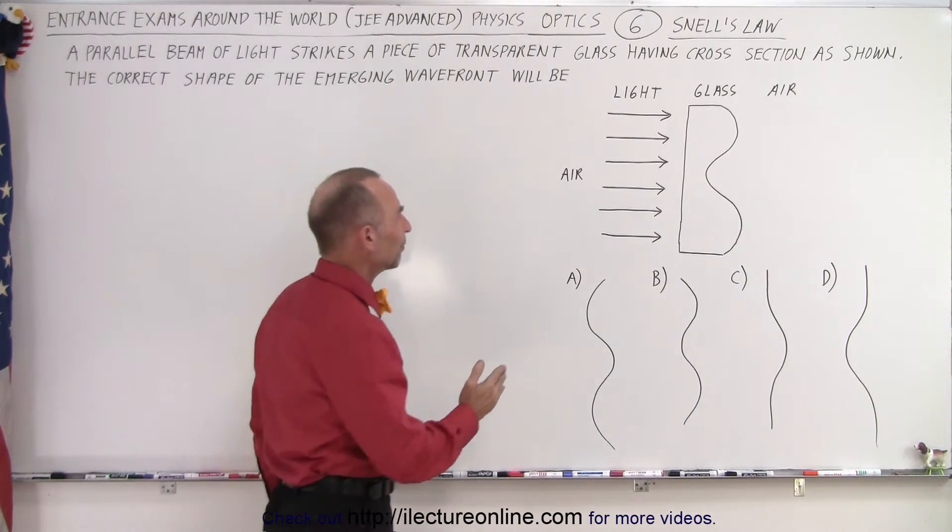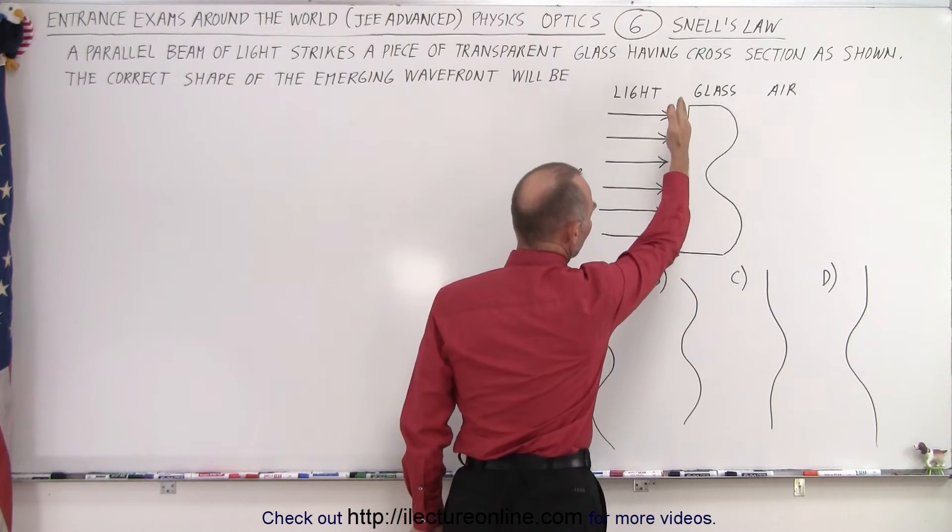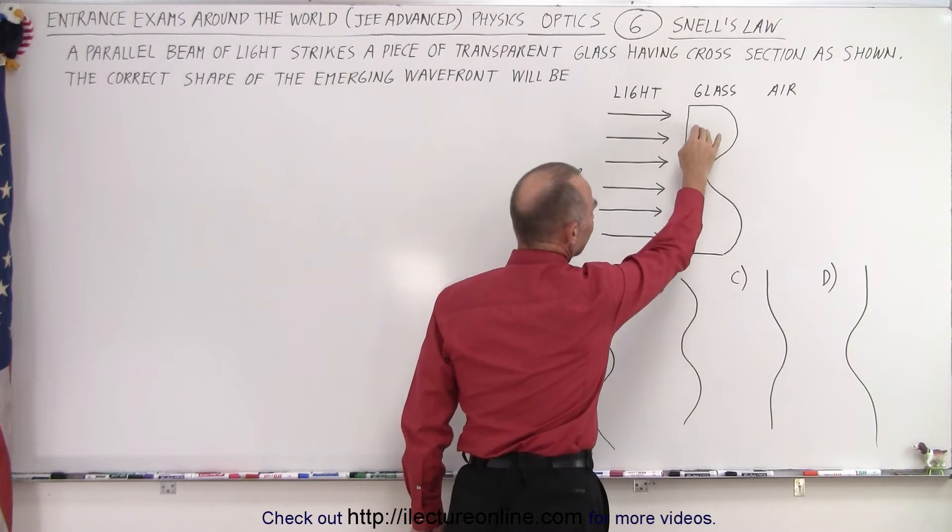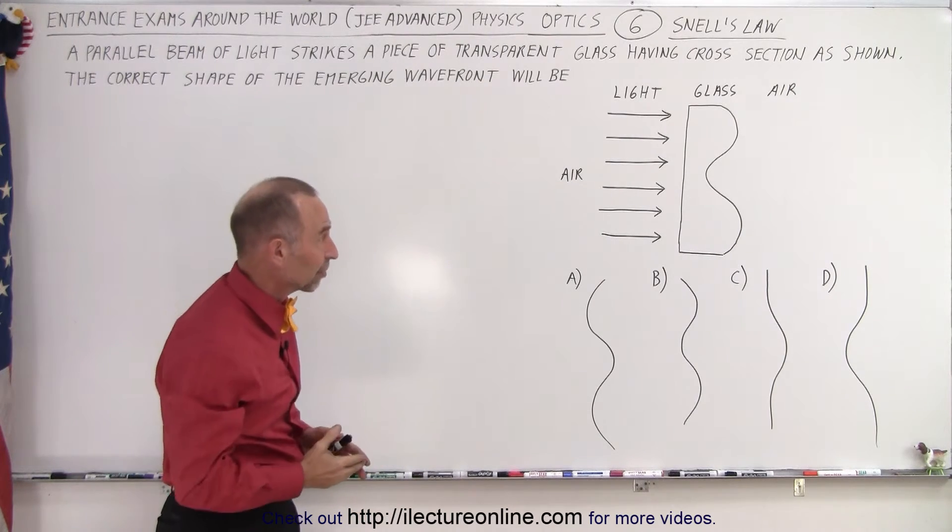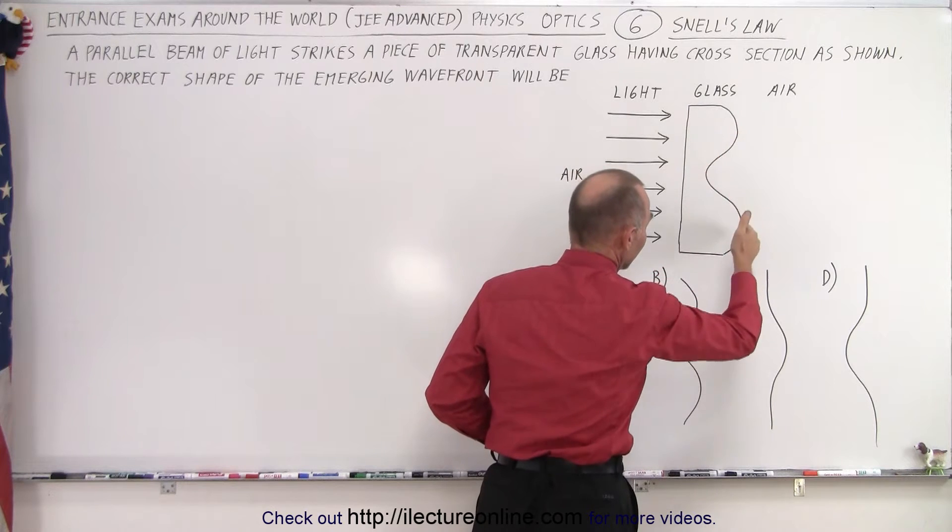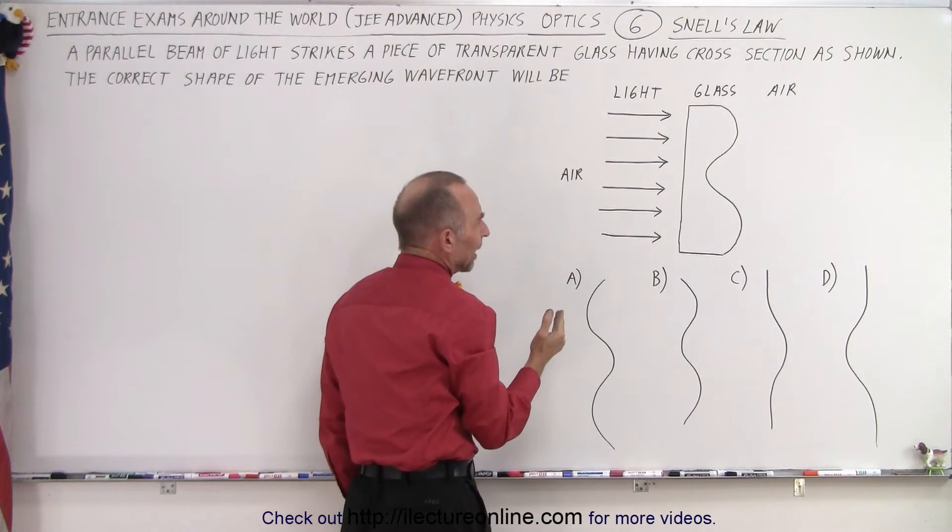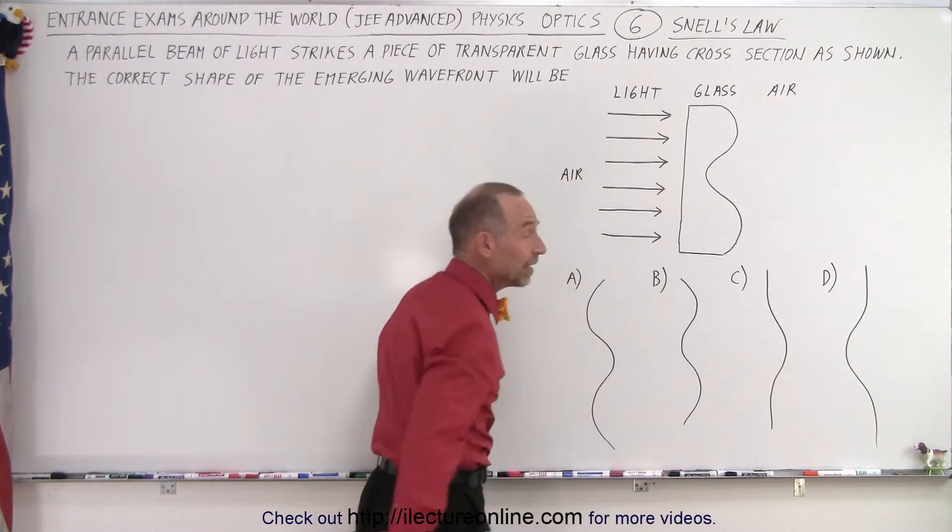So here we have a wavefront of light that enters a piece of glass which is straight on one side and curved on the other side. We know that the index of refraction of glass is larger than the index of refraction of air. It then emerges from the glass on the other side, but notice the other side is curved, and the question is what will the wavefront look like when it emerges on the other side: A, B, C, or D?